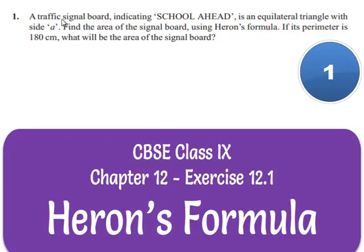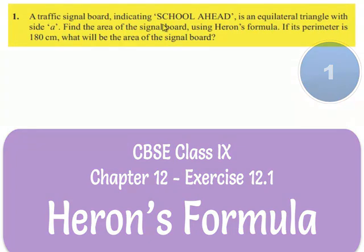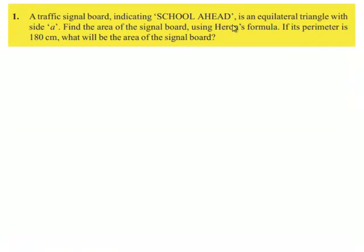Now let us move on to the first question in the exercise. A traffic signal board indicating school ahead is an equilateral triangle with side A. Find the area of the signal board using Heron's formula. If its perimeter is 180 cm, what will be the area of the signal board?